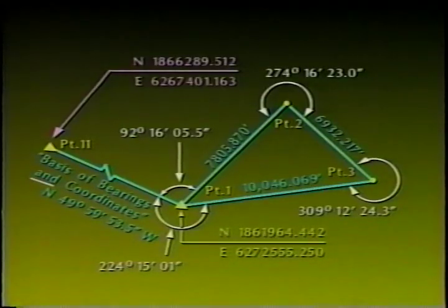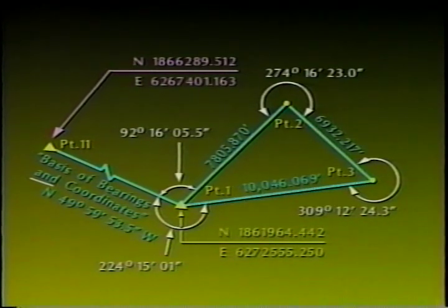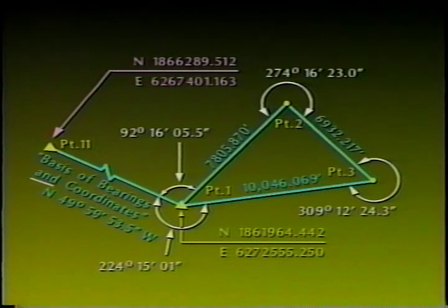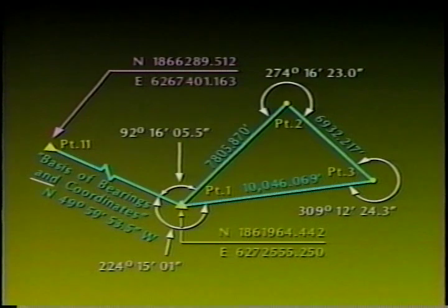The following is an example of a straightforward cookbook method of calculating and adjusting a traverse using latitudes and departures. In the following example, we observe a closed linear traverse with three sides. You can presume that all angles shown have been reviewed and correctly represent the field observations, but have not been adjusted, and all distances shown have been reduced to grid distances. Note that at point one, the closing angle was turned from point three back into point eleven, which provides a check on the angular closure for the traverse.